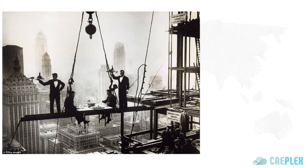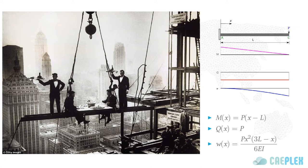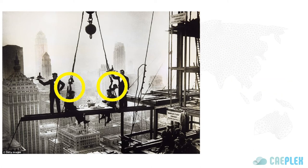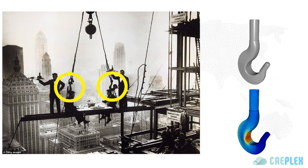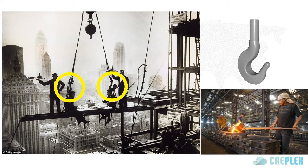Let us pretend we were one of the fellows up there posing for the picture back in the 30s in Manhattan. Engineers know how to solve beams with paper and pencil. But what about the hooks the beam is hanging from? On the one hand, we don't know how to solve hooks with pencil and paper — we need to involve a computer with a complex and expensive piece of software. On the other hand, such hooks may be cast or forged in a small workshop that cannot afford the complexity and price of such software.